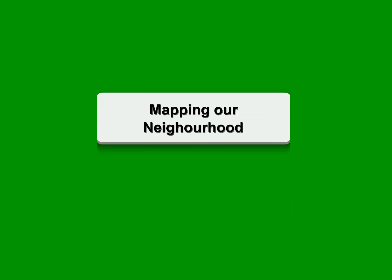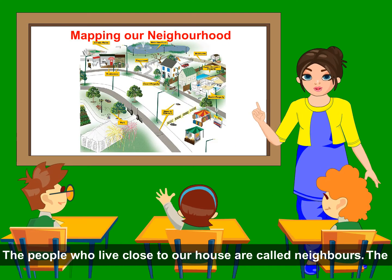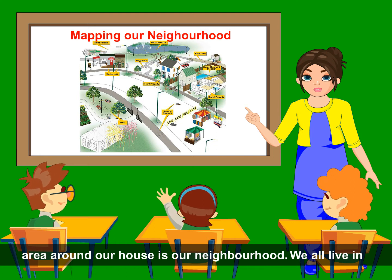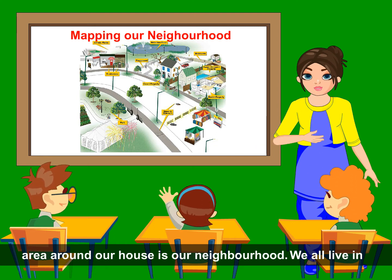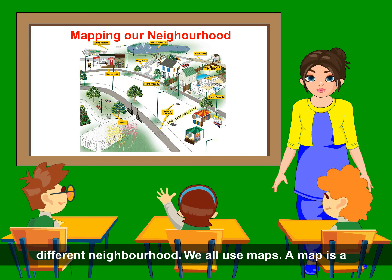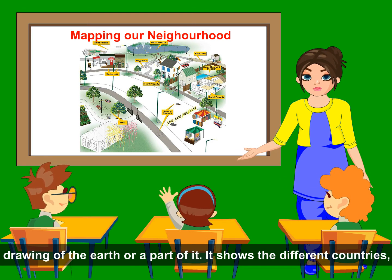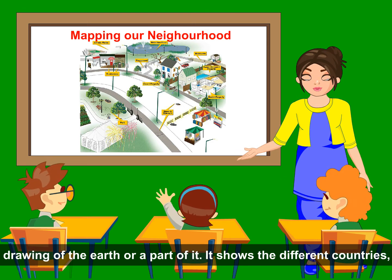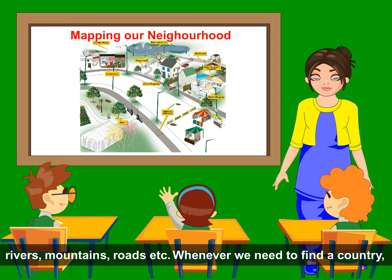The people who live close to our house are called neighbors. The area around our house is our neighborhood. We all live in different neighborhoods. We all use maps. A map is a drawing of the earth or a part of it. It shows the different countries, rivers, mountains, roads, etc.